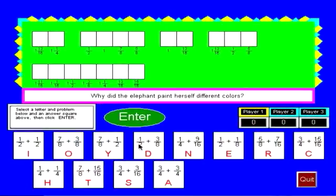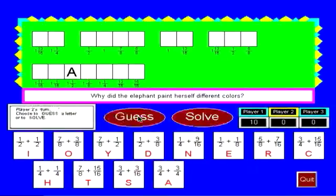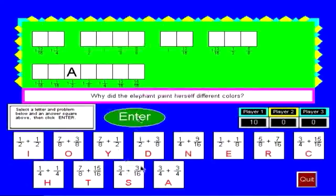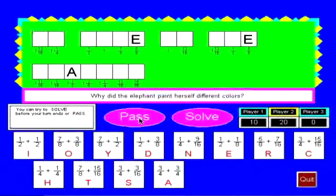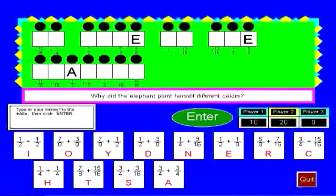So player one, let's guess a letter. So A is three fourths plus three fourths, six fourths, which is one and a half. So A should go there. And let's pass on to player two. E is one half plus one eighth. So one half is four eighths plus one eighth is five eighths. So E goes there. So you can continue on trying to guess letters. And if you get to a point where you think you can solve the riddle.